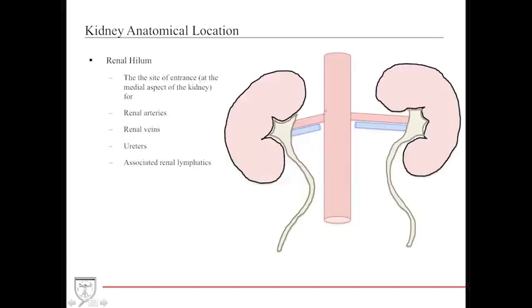The renal hilum, similar to the hilum of the lungs, is the medial aspect of the organ where all important structures enter — including the renal arteries, renal veins, ureters, renal lymphatics, and the autonomic nerves that help regulate the kidneys.